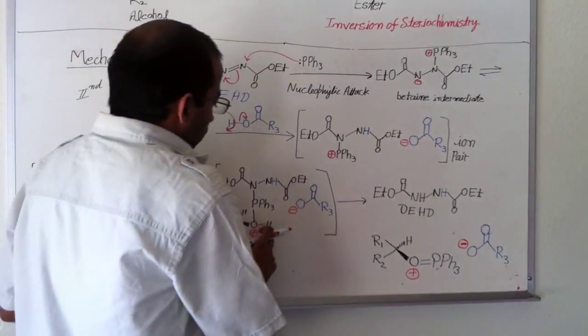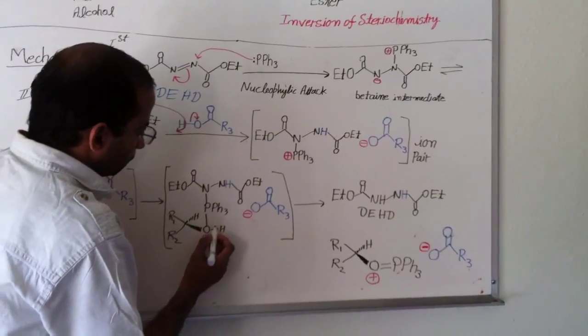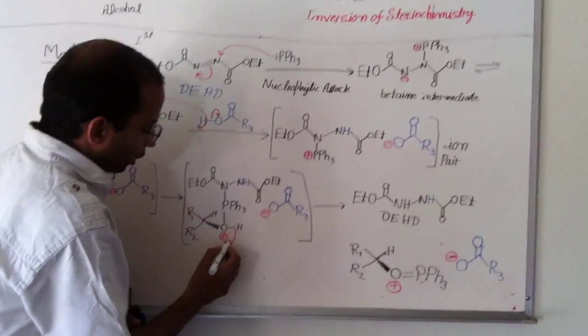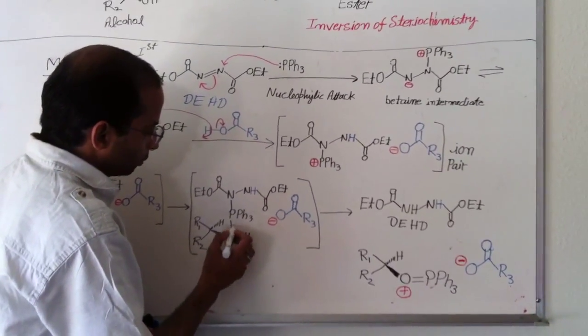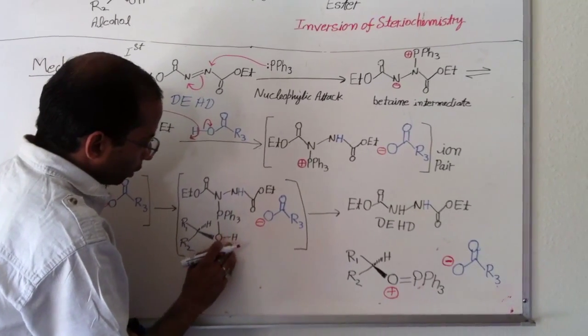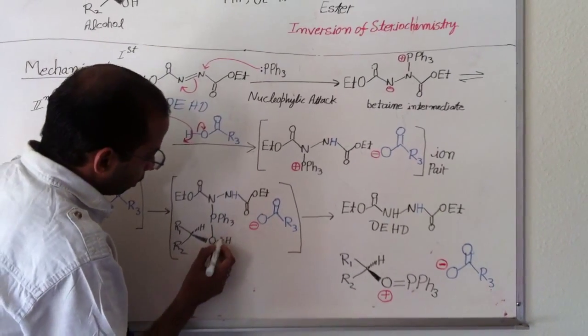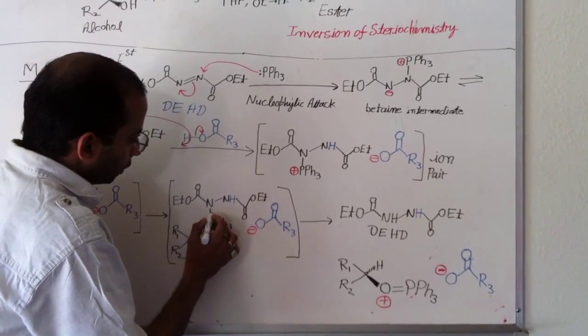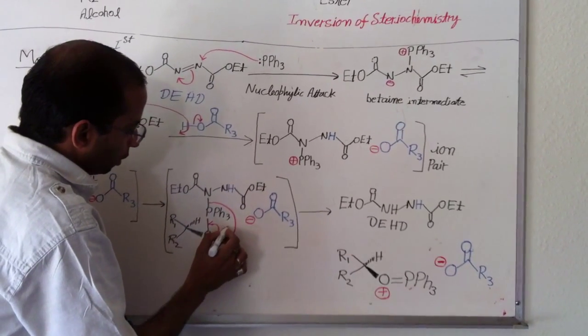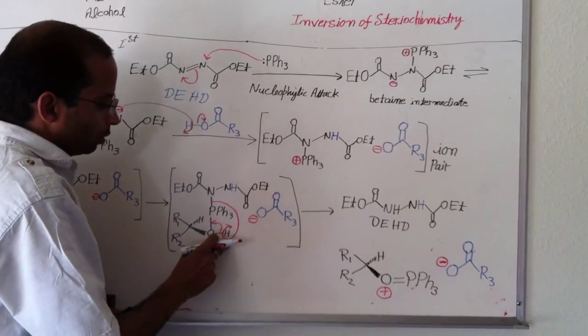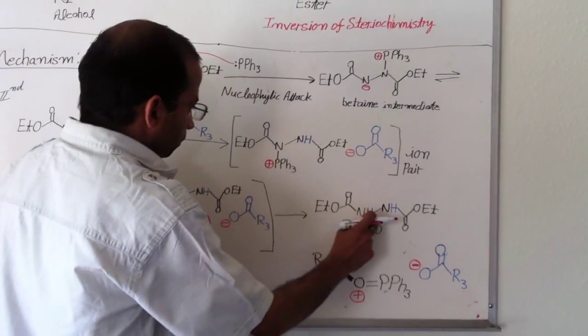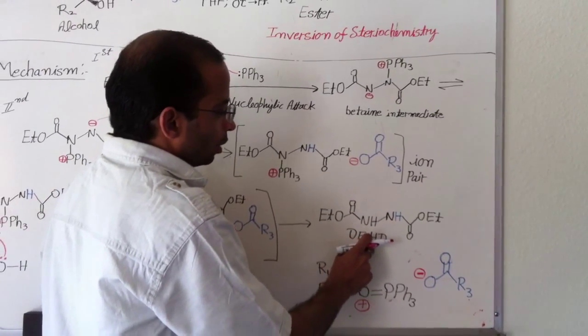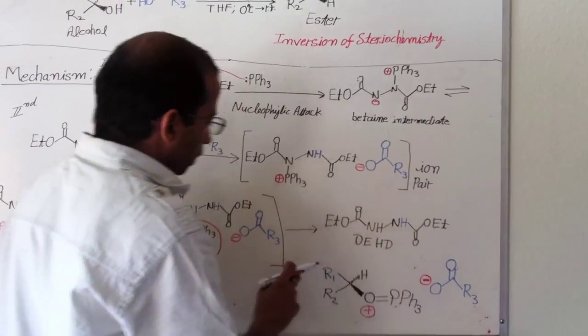And then, in the next step, what happened? This proton donates its electron to the oxygen. Or you can see in the reverse direction, you can do it like this. And this bond takes a proton, this proton from alcohol. And it reduces to DEHD, diethylhydrazine dicarboxylate. And then, it produces two more intermediates.